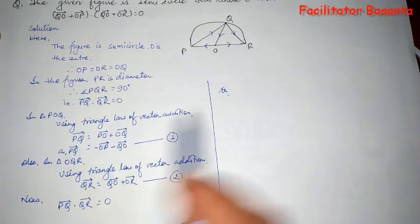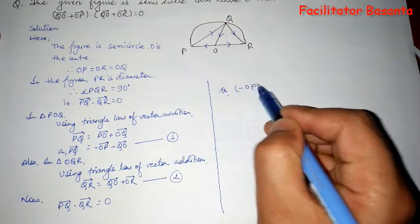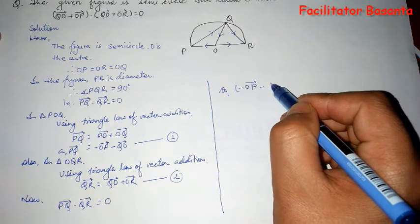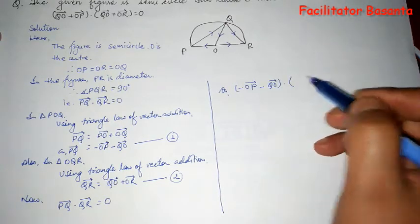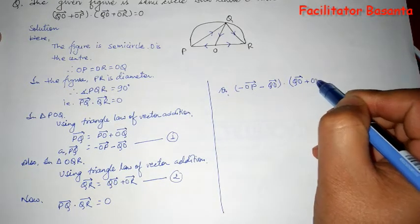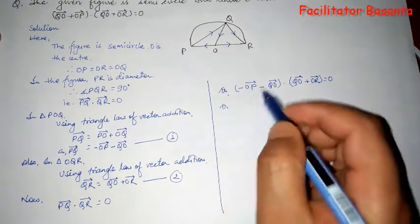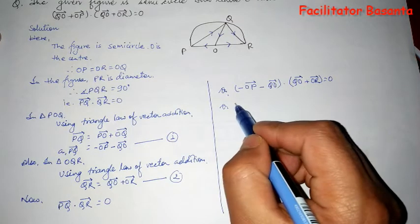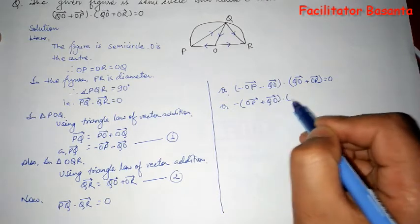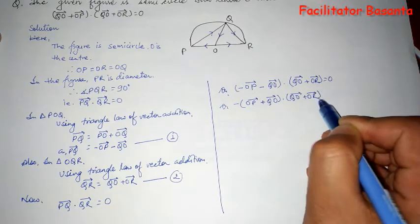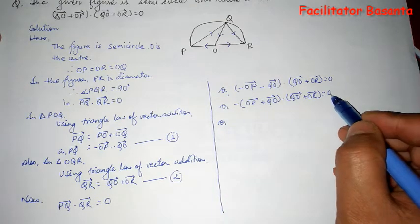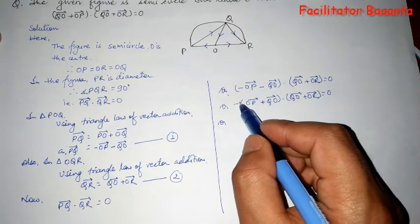PQ means negative of OP vector minus QO vector, dot QR vector means QO plus OR vector equals zero. Both terms contain negative sign, so you can take negative common. OP vector plus QO vector, dot QO vector plus OR vector equals zero. If we divide this zero by the negative sign, it will still be zero.